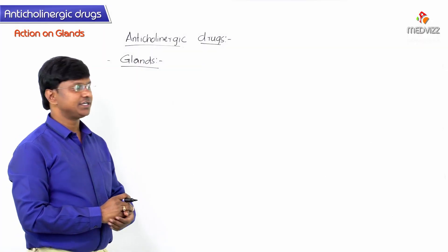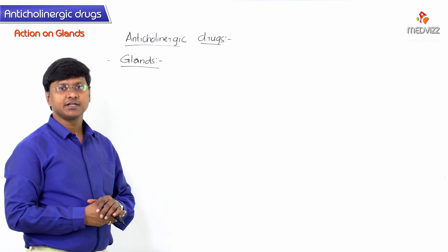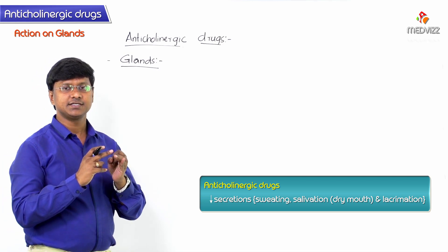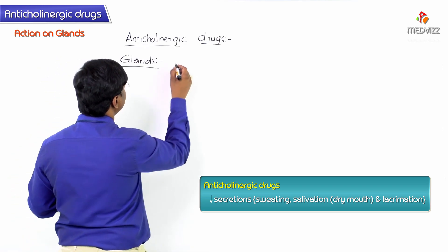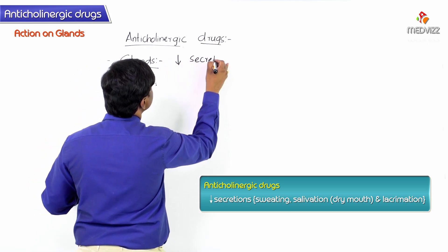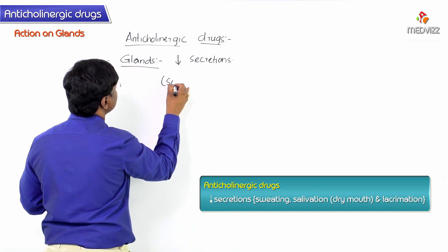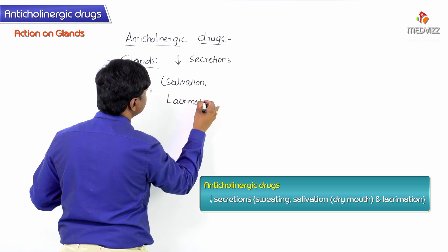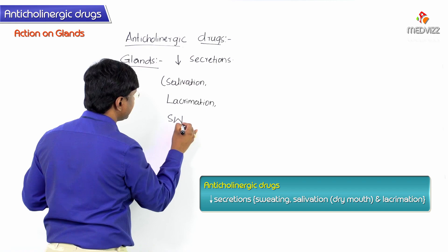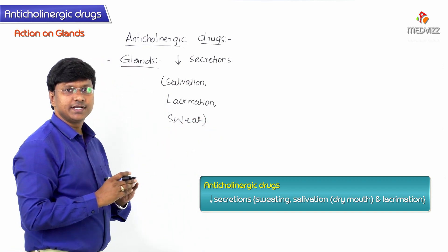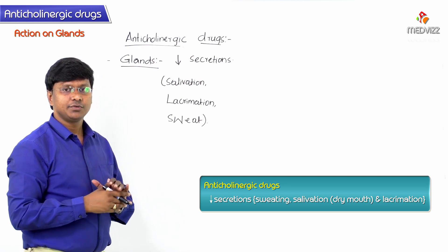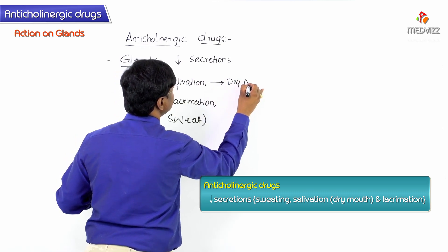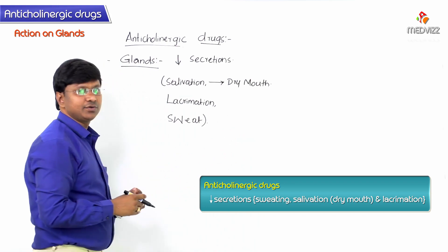Now let me discuss the action of the anticholinergic drugs on the glands. These drugs will decrease the secretions — they will decrease salivary secretion, sweat secretion, and lacrimation. So salivation is reduced, lacrimation is reduced, and sweat secretion is also reduced. Because they reduce salivary secretion, these anticholinergic drugs will cause dry mouth.